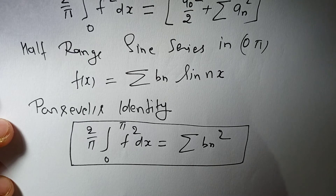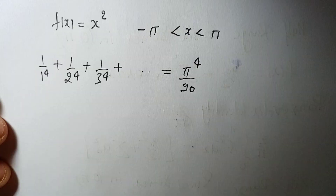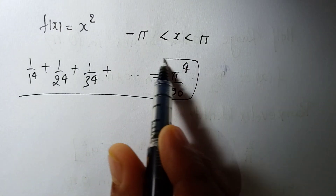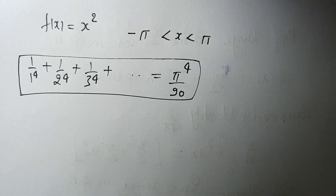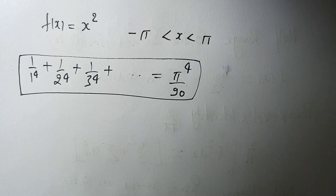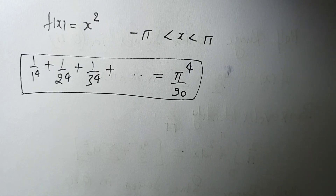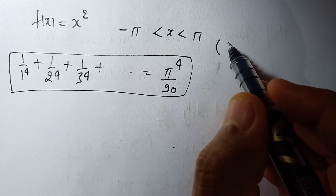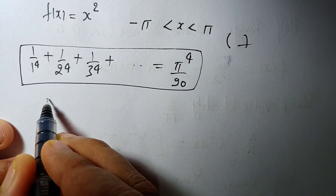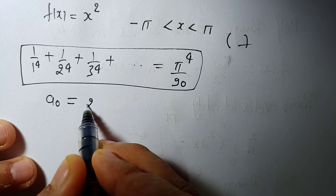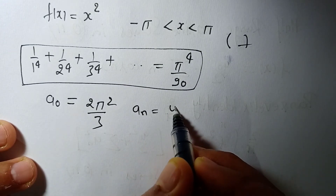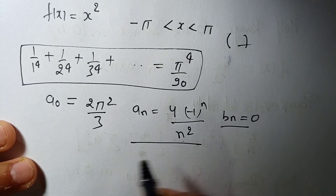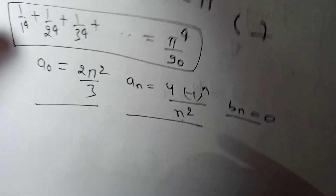Let us see one problem on how we can use Parseval's Identity to solve a Fourier series related problem. The problem is: f(x) = x² on [-π, +π], and we need to prove a given identity using Parseval's Identity. To apply Parseval's Identity we need the Fourier coefficients — you can check my video on the Fourier series for the derivation. For this problem: a₀ = 2π²/3, aₙ = 4·(-1)ⁿ/n², and bₙ = 0.